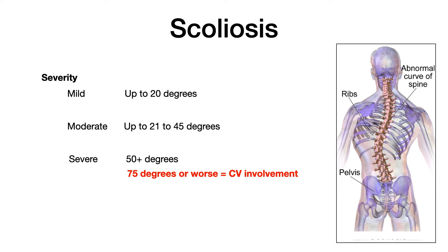One very high-yield fact: with severe scoliosis at 75 degrees or worse, you get cardiovascular compromise. As that spine bends severely, the ribs and thoracic vertebrae are going to compromise cardiovascular function — pushing on the heart and restricting the lungs. On Comlex, you could get a question giving you a Cobb angle of 77 degrees and asking which complication is likely. Among seemingly random choices, you'll want to pick the answer involving cardiovascular involvement.